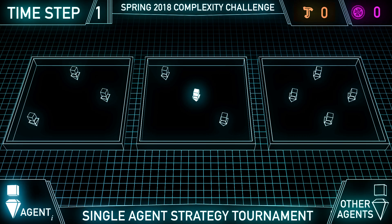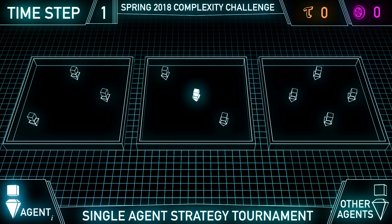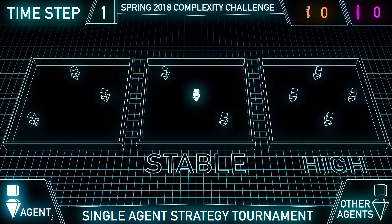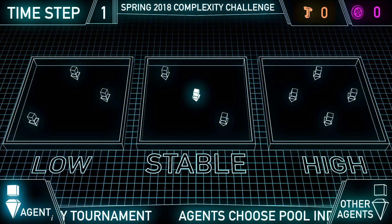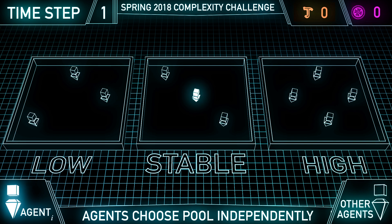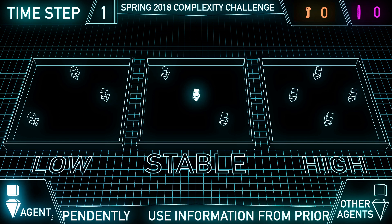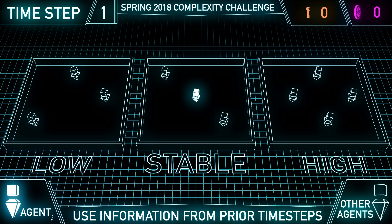Suppose there are 50 agents. At each time step, each agent must decide to locate at one of three possible pools. These pools are called stable, high, and low. Agents must choose their pool without knowledge of what the other agents have picked and can only rely on information from prior time steps.